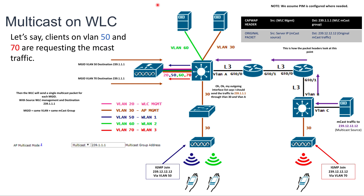The switch checks its 'show ip mroute' and its outgoing interface list for 239.1.1.1 says it should send that traffic through VLAN 30, because it received an IGMP join or membership report from the APs for that group on VLAN 30. It also received the IGMP join through VLAN A because there is an AP on the remote site that sent that IGMP join and it reached the switch through VLAN A. So the switch sends that traffic on those two links — the original Multicast packet from the server went to the controller, got encapsulated inside a CAPWAP packet, and now is going back towards the AP. The process repeats on all the routers, which check 'show ip mroute' and send on outgoing interfaces.